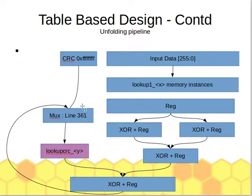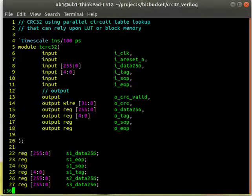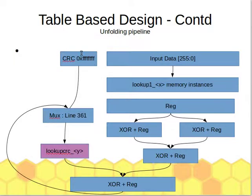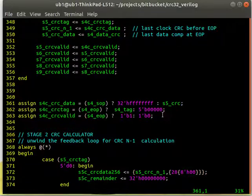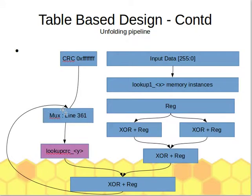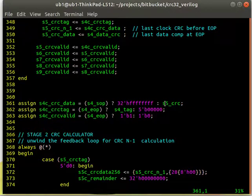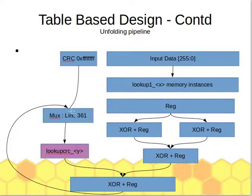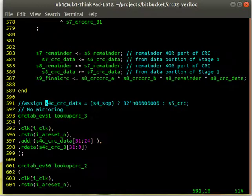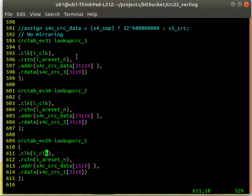Looking at line 361, if it's the very first clock cycle the CRC value is all Fs; otherwise it takes the fed-back data from the previous processed clock cycle. This is the S4 combinatorial stage where CRC data is either set to Fs or taken from the S5 output and fed back. That prepared data is then looked up in the CRC table via the lookup CRC function — there are four of those, one per byte lane of the CRC.